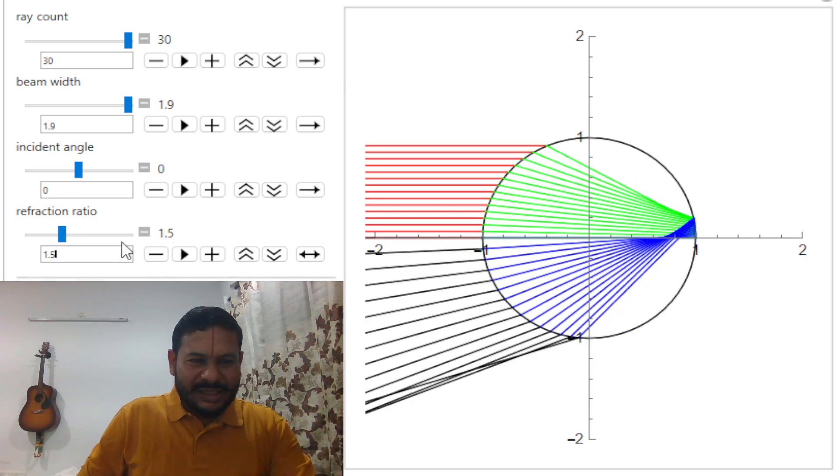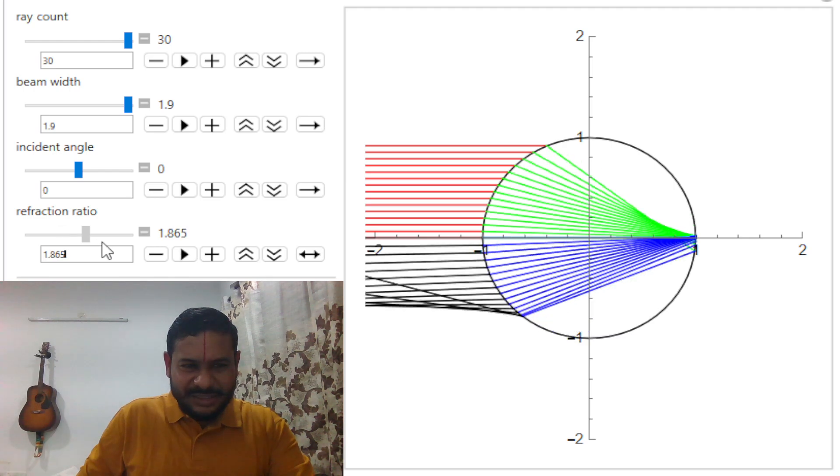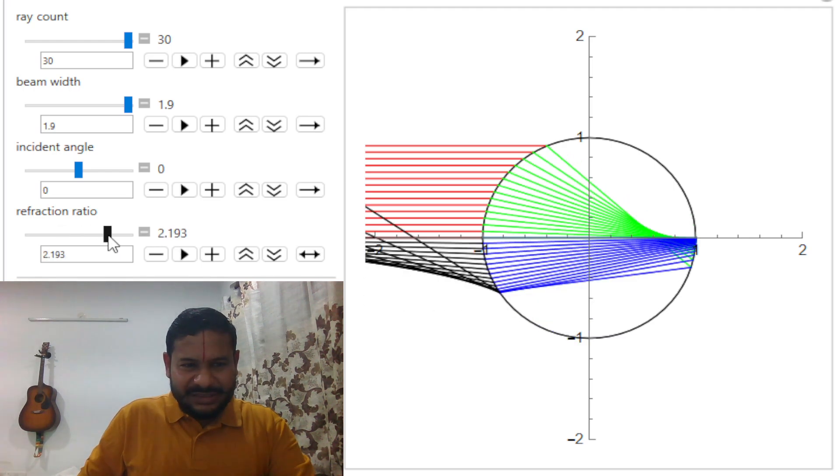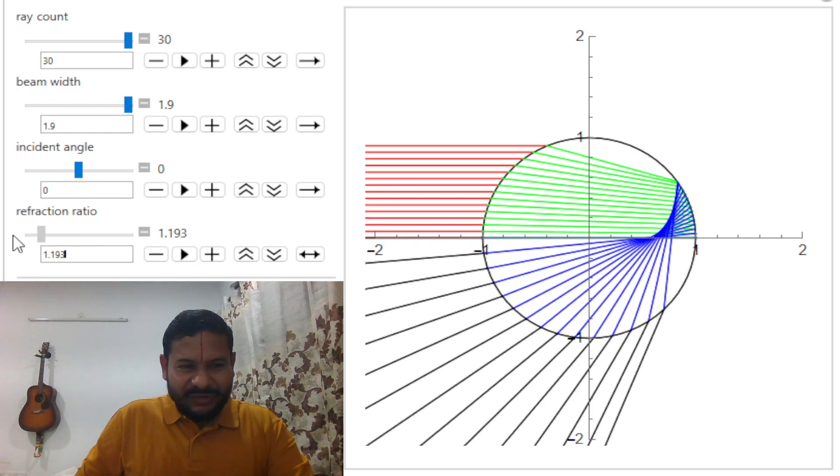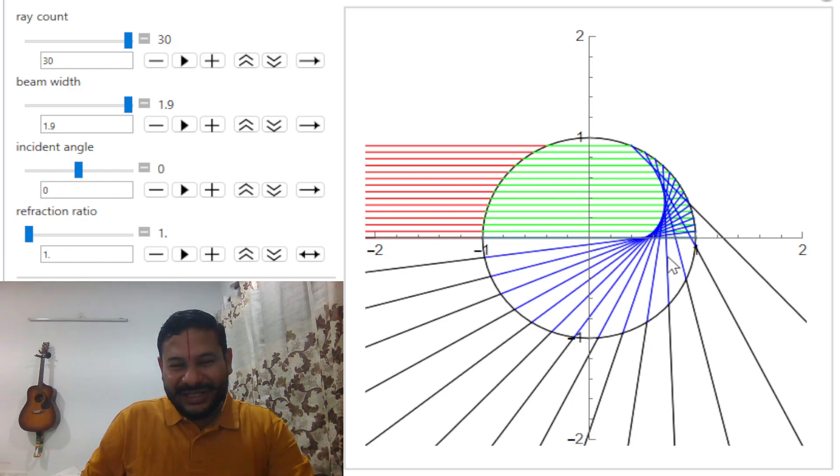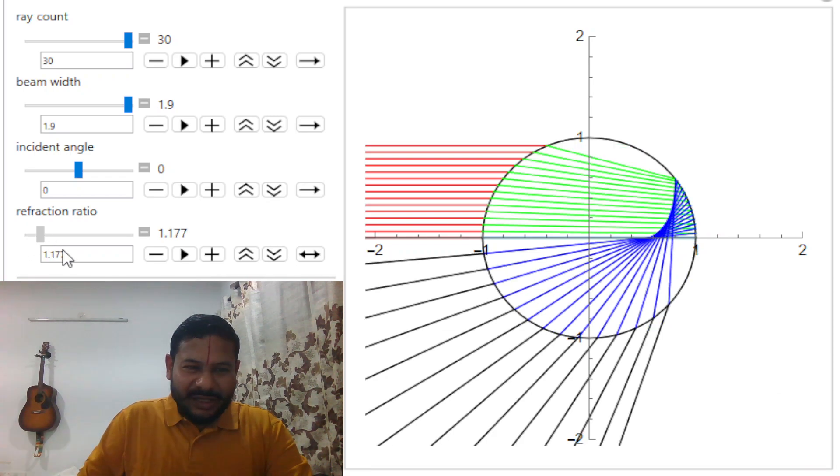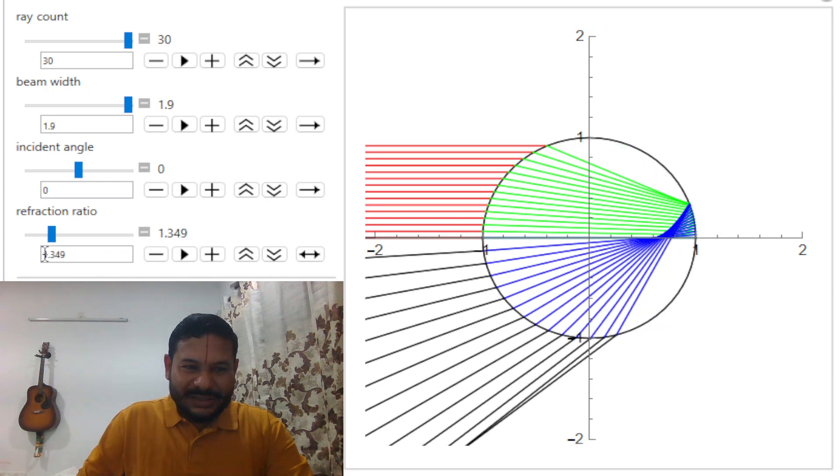And I can continuously change the refractive index from here, see? If I change the refractive index, this is very high, 2 point something refractive index. And you can see after this refraction, the rays are going upwards and I can similarly reduce and you see, if I reduce the refractive index to, let us say 1, then these rays are going straight away. And then it's still showing reflection over here. It's not refracted. Please note that this is showing some reflected rays.